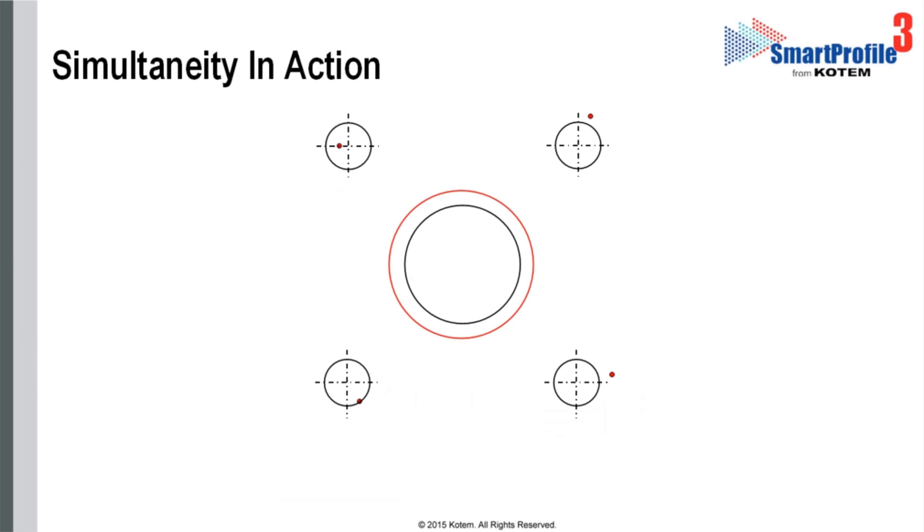Let us observe what that means in our case. As the gauge moves with respect to the part, the black circle representing the datum must not penetrate the datum feature.